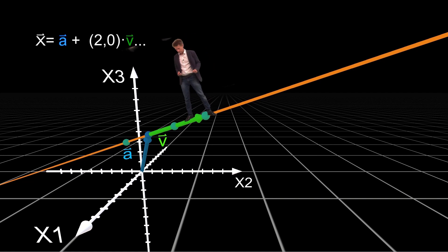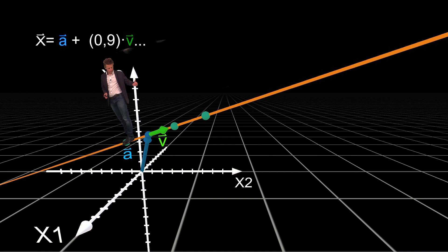By the way, this also works in the opposite direction. For example, if I want to reach this point, I simply walk my direction vector in the opposite direction. In our equation it looks like this: point a plus minus one times our direction vector.